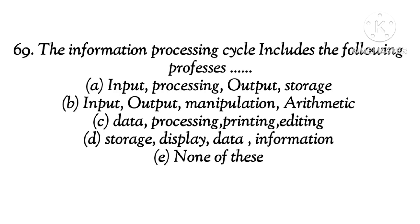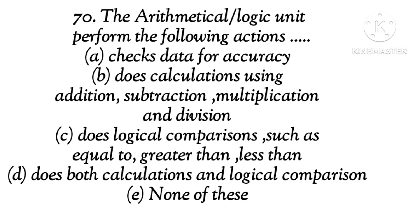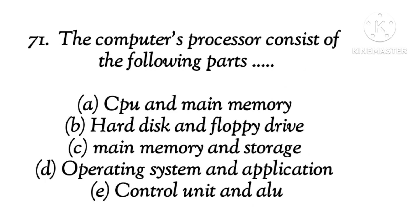Question 69: The information processing cycle includes the following processes. The right answer is A: input, processing, output, storage. Question 70: The arithmetic logic unit performs the following actions. The right answer is D.